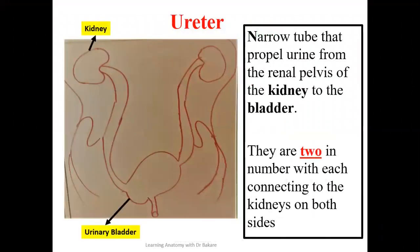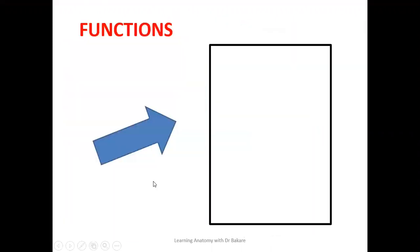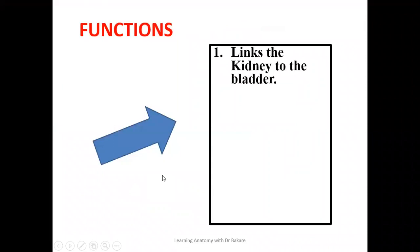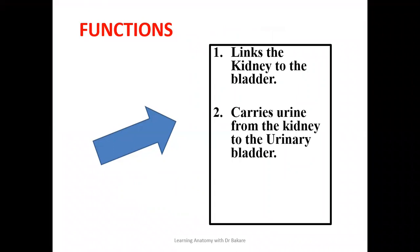The ureter is a narrow tube that carries urine from the kidney down to the urinary bladder. We have two ureters because we have two kidneys, so that urine is carried from both kidneys down to be stored in the urinary bladder. The functions of the ureter, basically, is that it links the kidney with the urinary bladder.